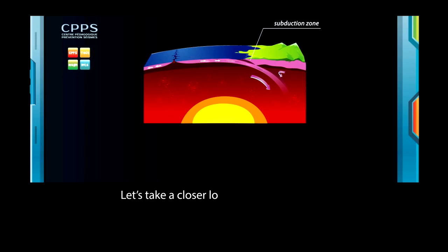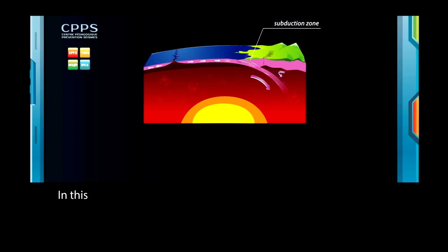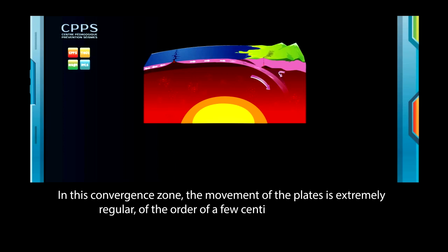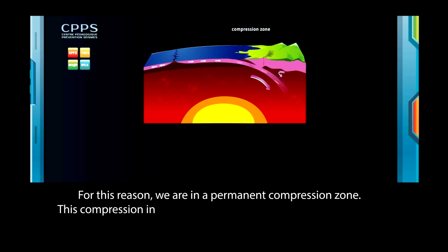Let's take a closer look at what happens in the subduction zone. Here the oceanic plate plunges under the continental plate. The problem is that the Earth's crust is elastic and brittle. It is not at all viscous, and therefore, its movement stops at the point of contact between the two plates. In this convergent zone, the movement of the plates is extremely regular, of the order of a few centimeters per year. For this reason, we are in a permanent compression zone. This compression increases from day to day, and from year to year.